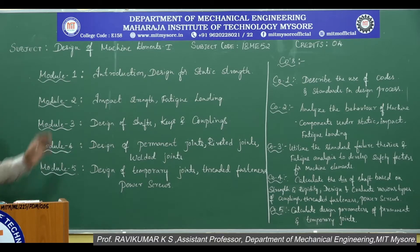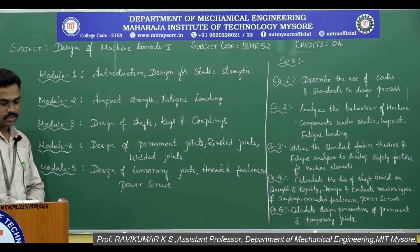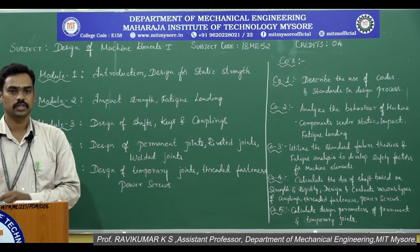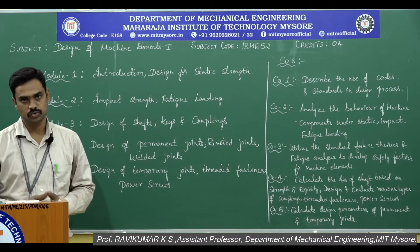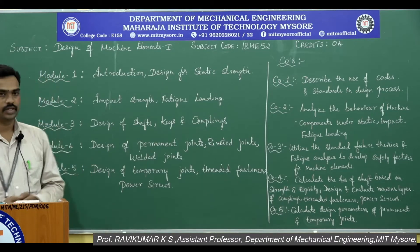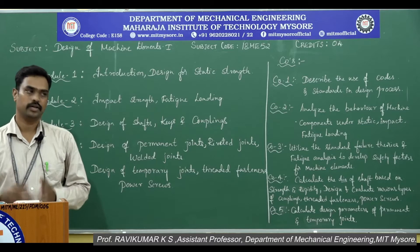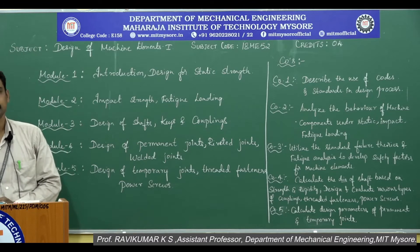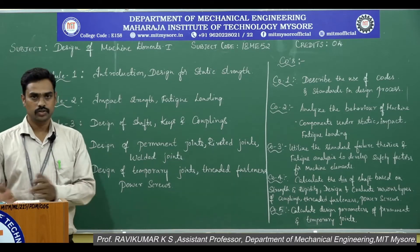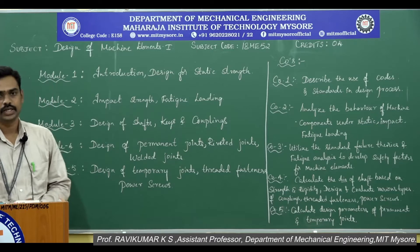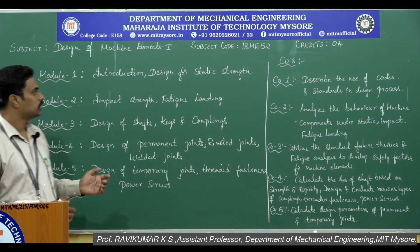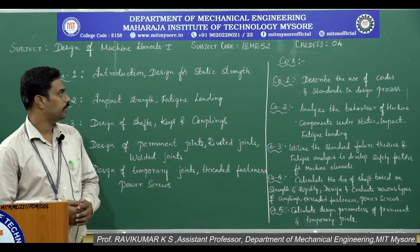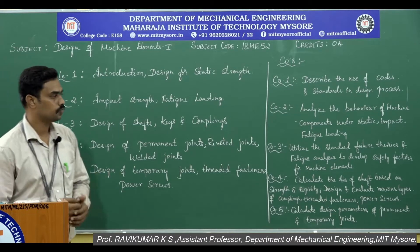We will get into the subject design of machine elements. This is a VAS subject; it is split into two parts: Design of Machine Elements 1 and Design of Machine Elements 2, because there are a number of machine elements that cannot be accommodated in a single semester syllabus. It is split into two different parts studied in two different semesters. The subject code is 18ME52 and the credits allotted are 4.